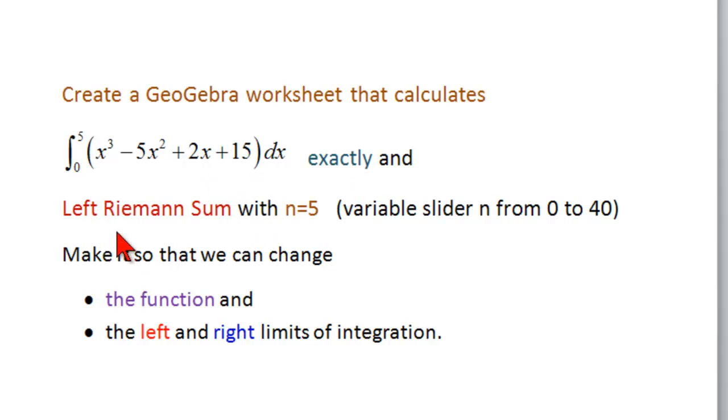And using left Riemann sums with n equal to 5. We're going to have a variable slider, because that's very easy to do, and we're going to make it so that we can change the function and the left and right limits of integration, but in a very basic way.